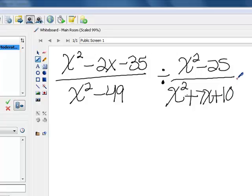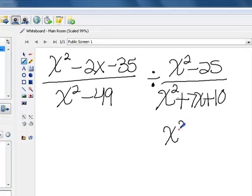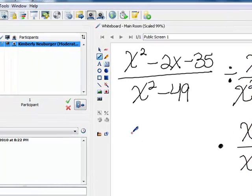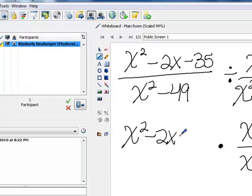Now, the first thing that we want to do is go ahead and flip our second fraction over so that we have x squared plus 7x plus 10 in the numerator and x squared minus 25 in the denominator. And instead of division, we now have multiplication. The first expression we're just going to copy down exactly the way it was.